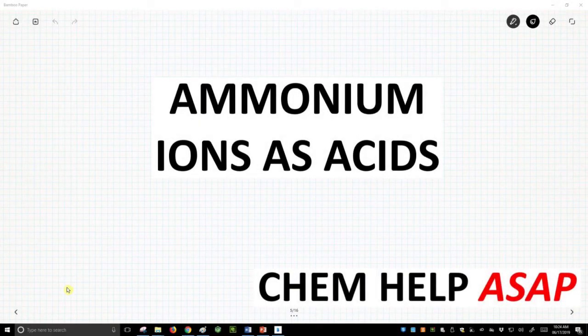Good day from Chem Help ASAP. I mentioned in a previous video that when we do acid-base chemistry, we normally start with an acid, something like HA, where the acid is neutral.